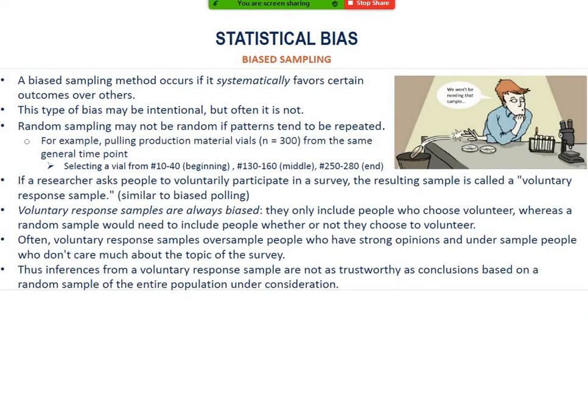Another misuse of statistics is biased sampling. A biased sampling method occurs if it systematically favors certain outcomes over others. Sometimes the bias might be intentional, but most of the time it is not. For example, you have a production material of 300 vials but you're only selecting some. Even more, if a researcher asks people to voluntarily participate in a survey, the resulting sample is called a voluntary response sample, which is similar to bias polling.